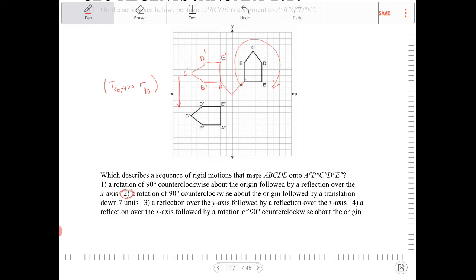Option 3, a reflection over the y-axis, no, because then again, that will cause a reversal of the orientation. And number 4, a reflection over the x-axis, again, a reversal of the orientation there, so only option 2.